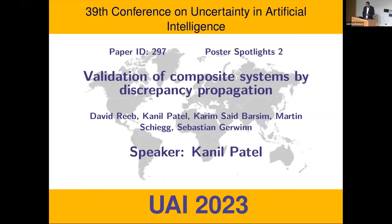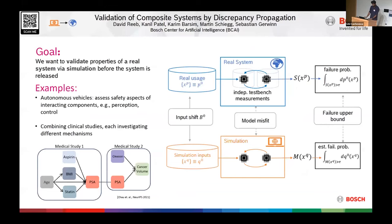The third poster is on validation of composite systems by discrepancy propagation. So, hi, good afternoon. I'll be briefly introducing our work, the validation of composite systems by discrepancy propagation. This work was done at the Bosch Center for AI. So imagine you're tasked with creating a complex real world system, such as a car, and you want to make sure that this car adheres to some specific requirements.